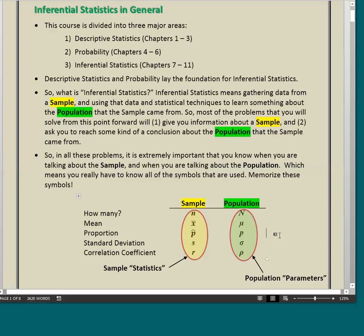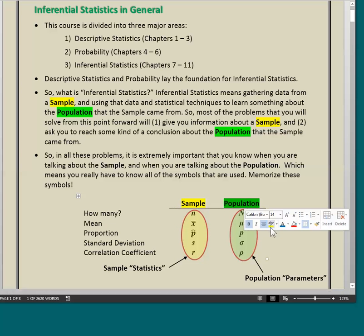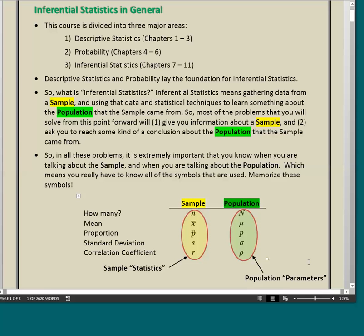And by the way, don't get these words mixed up. Proportion is a word. Population is a word. They're both long words that start with p, but they're completely different things. So don't confuse proportion and population. We'll talk more in another video about what a proportion actually is.